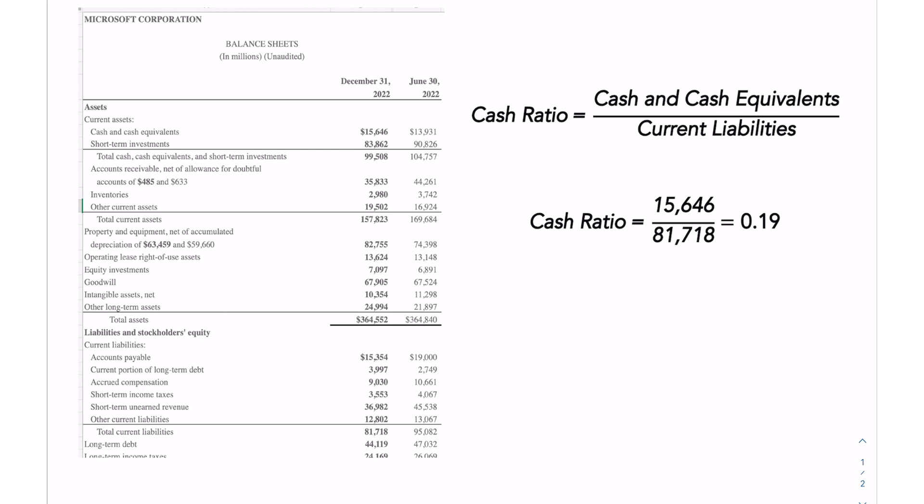In the case of Microsoft, they have $15,646 in cash. The liabilities are still $81,718. So if we compute that as a ratio, it comes out to about 0.19 or 19%. Using only the cash on hand today, Microsoft would be able to afford about 19% of its next 12 months worth of liabilities.